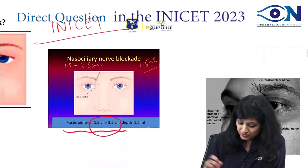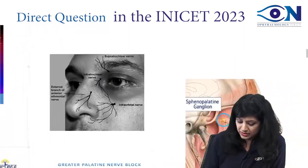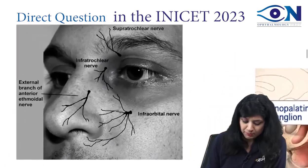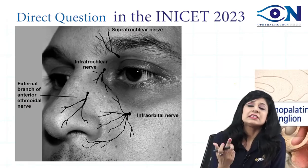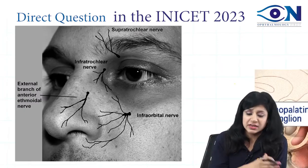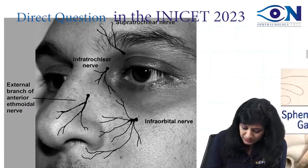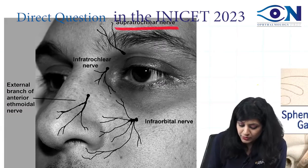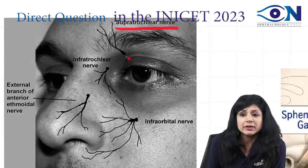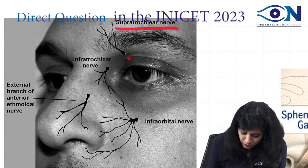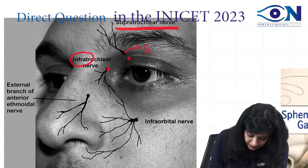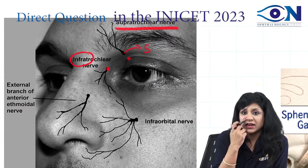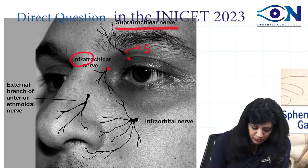We have got different kinds of blocks with respect to this. For easy remembering, there are different branches. If you remember these simple branches, you can easily tell what kind of block it is. If you start from this side, this will be your supratrochlear block, and this will be your infratrochlear. Then here we will have the anterior ethmoidal nerve block.